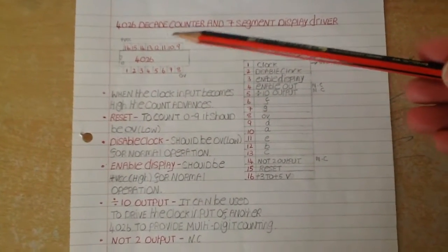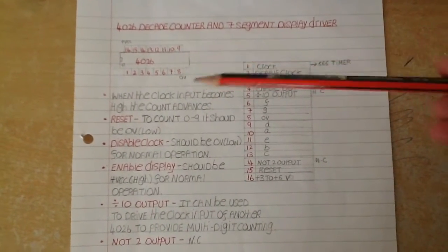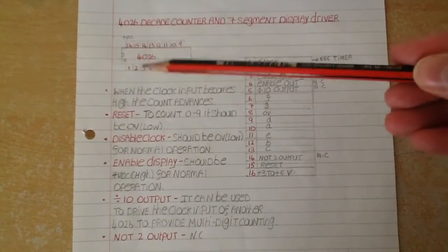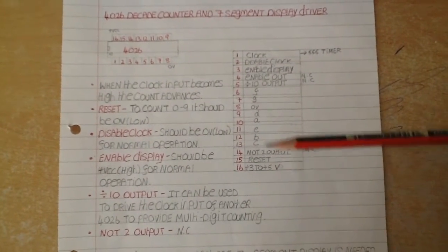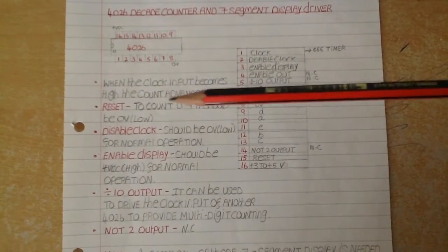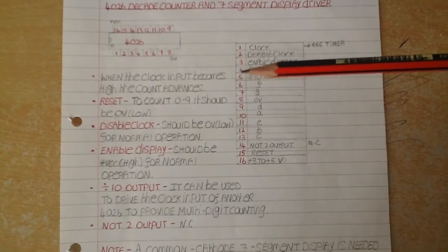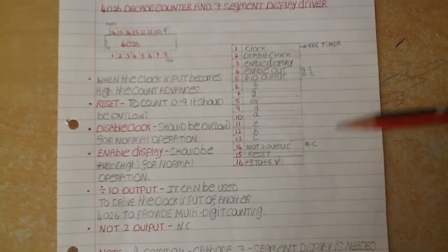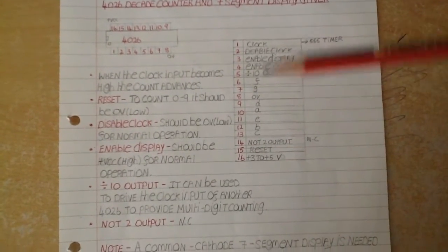We are using the 4026 decade counter and 7-segment display driver. This is the pin layout here, so it has 16 pins. This tells you what each pin is. The only pins that I am not using in my circuit are pin 4, 5, and pin 14. I use all the rest of the pins.